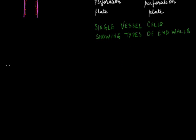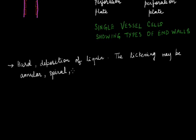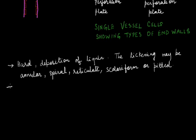The walls of the vessels are hard and have thickening of lignin. These thickenings can be annular, spiral, reticulate, sclariform, or pitted. The lumen of the xylem vessel is much wider in comparison to the tracheid element.